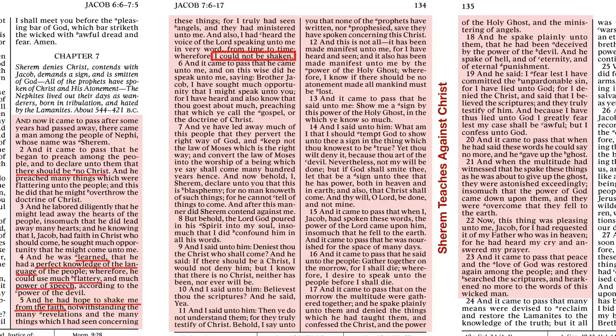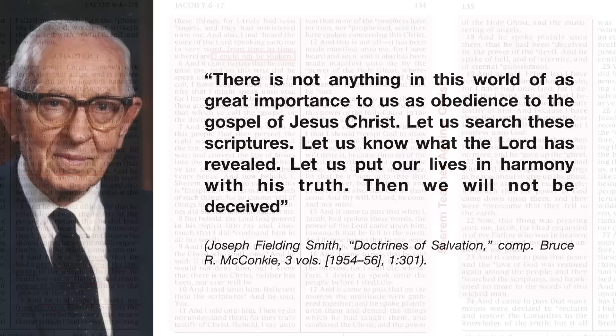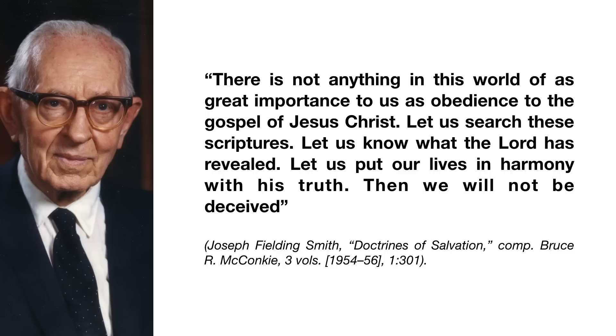To remind us - last week we talked about Jacob chapter 4, verse 6, where it talked about how the people became unshaken. We may not be able to relate to things such as seeing angels as Jacob did, but that kind of stuff doesn't necessitate 'could not be shaken.' Chapter 4 verse 6 gives a list that we can really relate to, and next week we'll talk about Enos. So it's not necessarily the big things, but as John points out, he has connected himself with the source of truth, and he cannot be shaken. From the Gospel Doctrine Manual, there's a quote from President Joseph Fielding Smith from Doctrines of Salvation, quote: There is not anything in this world of as great importance to us as obedience to the gospel of Jesus Christ. Let us search these scriptures. Let us know what the Lord has revealed. Let us put our lives in harmony with this truth. Then we will not be deceived, end quote.